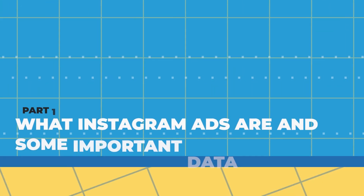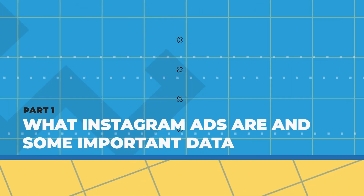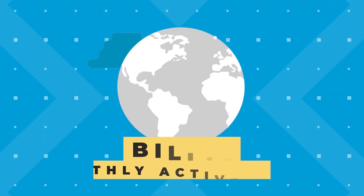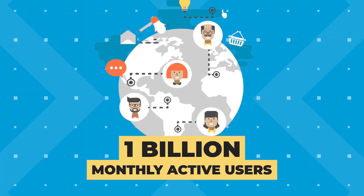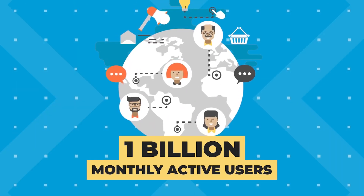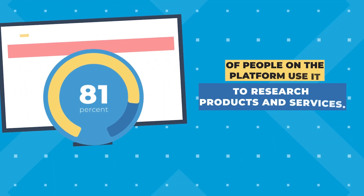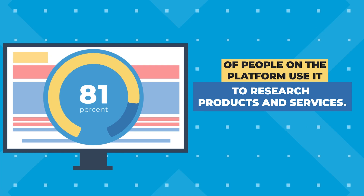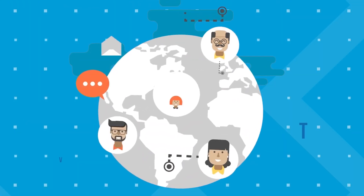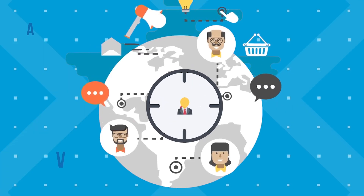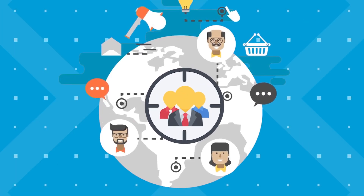So first, let's talk a little bit about what Instagram ads are and some important data to know. Instagram has about 1 billion monthly active users. And in addition to it just being a social platform for friends and family to connect, 81% of people on the platform use it to research products and services. That information combined is huge because it means within the 1 billion users, you're bound to find your target audience on the platform and you're likely to find them already in a buying mindset.